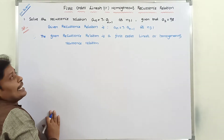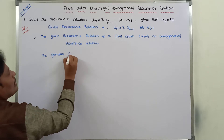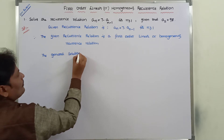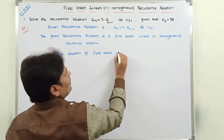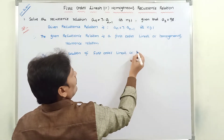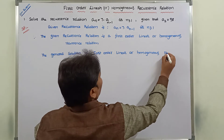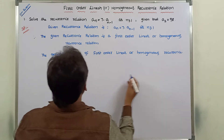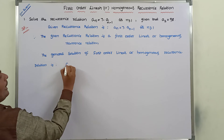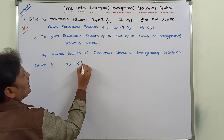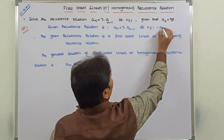Whenever this is a first order linear homogeneous recurrence relation, the general solution of first order linear homogeneous recurrence relation is: a_n = c^n · a_0. This is equation 2, and the original recurrence relation is equation 1.